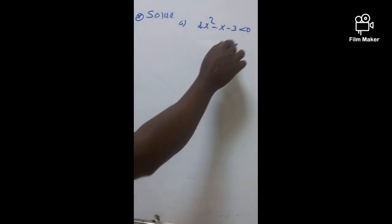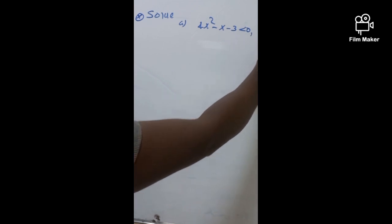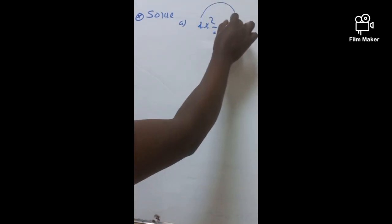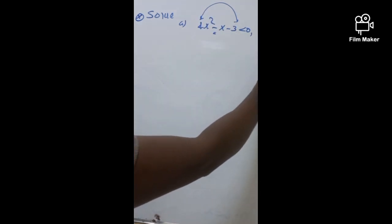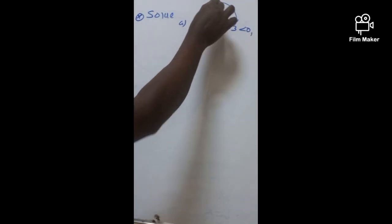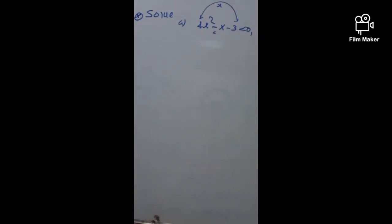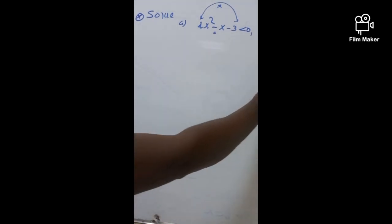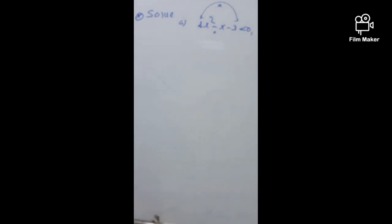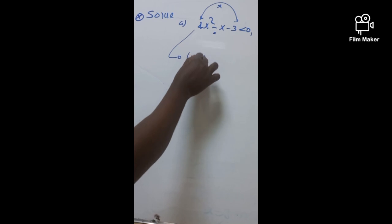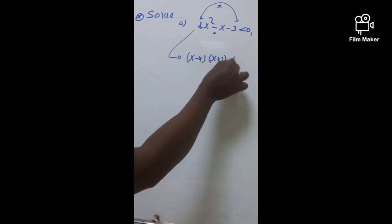In order to find the solution of this problem, first we need to find two numbers whose sum is exactly the coefficient of the middle term, that is negative 1, and the product is 4 times negative 3, which is negative 12. We need to find two numbers whose sum is negative 1 and product is negative 12, which is AC. Hence, the numbers are negative 4 and 3. The sum is negative 1, the product is negative 12, and hence this can be factorized as x minus 4 into x plus 3, which is less than 0.